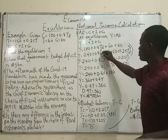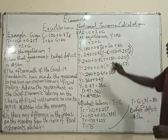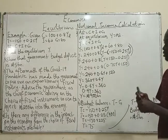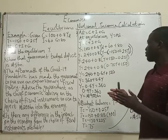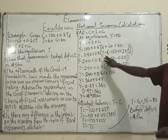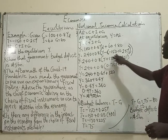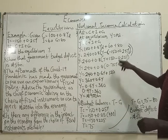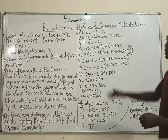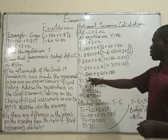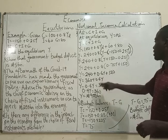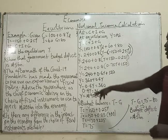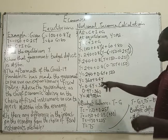Please don't make the mistake here — there is a minus sign, so it's Y minus minus, so minus times minus is plus 150, and minus times plus is minus 0.25Y. So Y equals 240 plus 0.8 times bracket Y minus 0.25Y equals 0.75Y, plus 150. So Y equals 240 plus 0.6Y plus 120, which gives Y equals 360 plus 0.6Y.